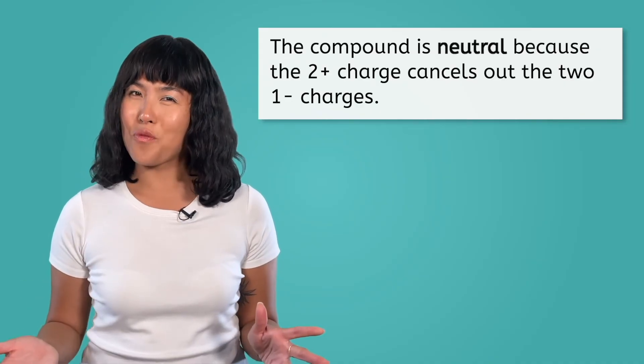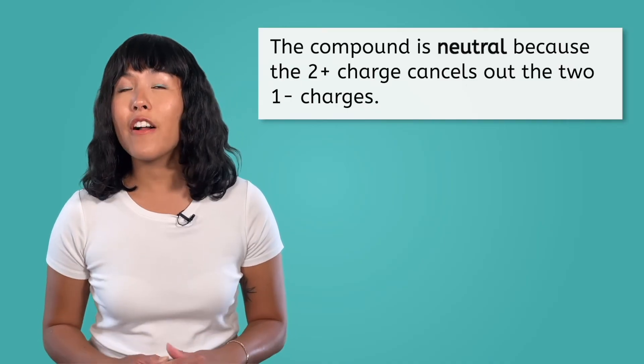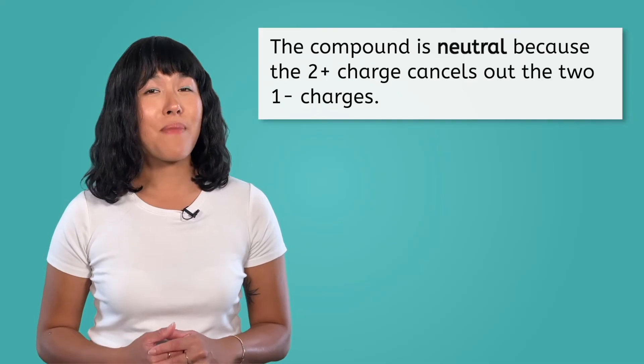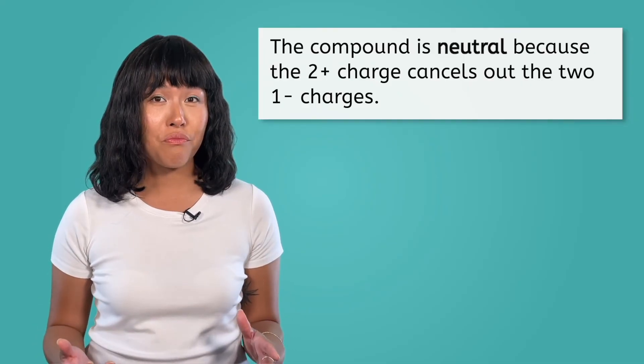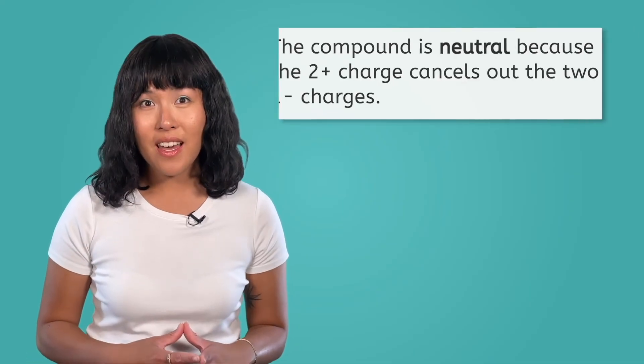How would we write this formula? Well, the metal, magnesium in this case, always comes first, followed by the non-metal, chlorine. How many magnesium atoms did we use? Just one, so we don't write a subscript for the Mg. How many chlorine atoms do we need? Two, so we need to write a little number 2 as a subscript for the Cl. So the formula of the compound formed when magnesium and chlorine bond is MgCl2.